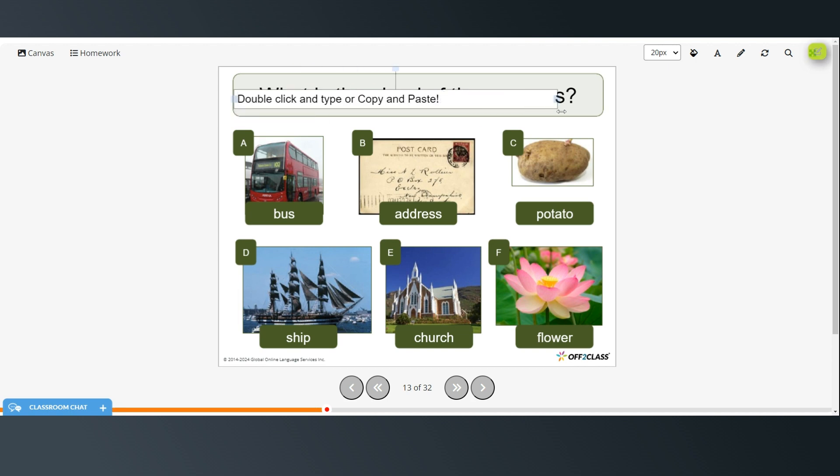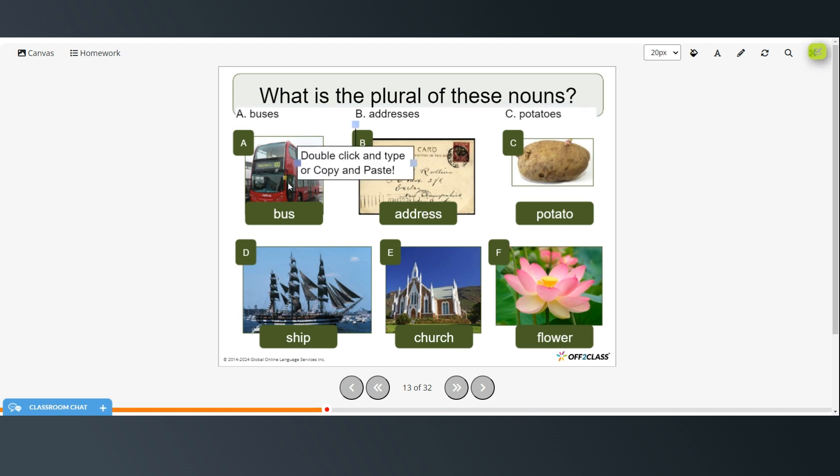Alright, same thing with these, make them plural. So A would be buses, because of the S we add ES. Addresses. And potatoes with an ES, potatoes. Okay, here we have ships with an S. Church ends in a CH, so it becomes churches. And flower is just simply adding an S, flowers.